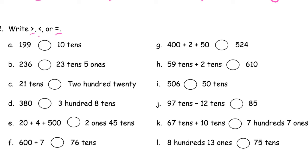Ten tens is the same thing as a hundred, and a hundred ninety-nine is greater than a hundred. Twenty-three tens and five ones is two hundred thirty-five, and two hundred thirty-six is greater than two hundred thirty-five. Twenty-one tens is two hundred ten, and this is two hundred twenty — so two hundred ten is less than two hundred twenty. Three hundred eighty and three hundred eight tens is three hundred eighty — they're equal.